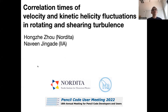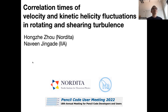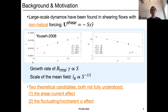I want to give a brief report on the result of measuring correlation times of velocity and helicity fluctuations. The concepts and calculations of those quantities are quite straightforward, but there are some subtleties in the definitions, what we really measure, and what could be the implications of those results. This is done together with Navin, who is also among the committee of this code user meeting.